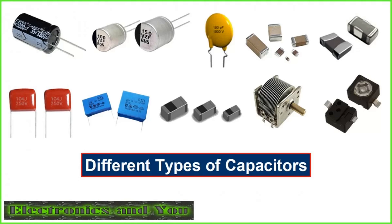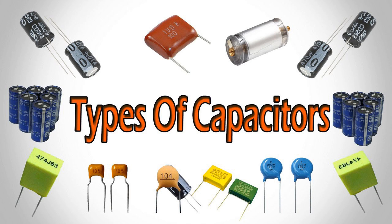Coupling capacitors allow the AC signal to pass through while preventing any DC bias from affecting subsequent stages. Commonly found in amplifier circuits, coupling capacitors enable the AC-coupled transmission of audio or other varying signals while maintaining the desired DC operating points in each stage. For example, in an audio amplifier, a coupling capacitor allows the audio signal to pass from the preamp stage to the power amplifier stage, ensuring that the DC bias points of the circuit stages are not affected.